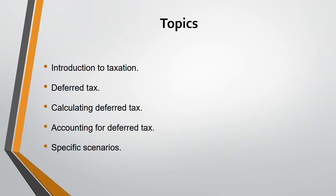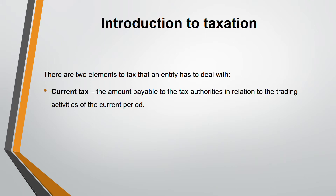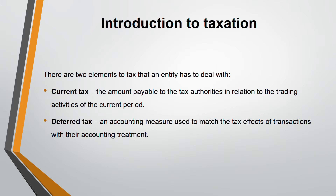Let's start with the introduction to taxation. There are two elements to tax. The first is current tax, which means the amount payable to the tax authorities in relation to the trading activity for the current period. The second is deferred tax, which is an accounting measure used to match the tax effect of transactions with the accounting treatment, because the tax effect of transactions and the accounting treatments are different.